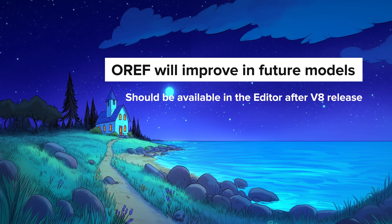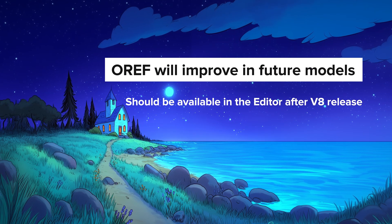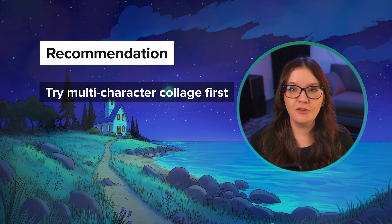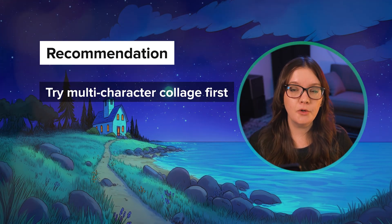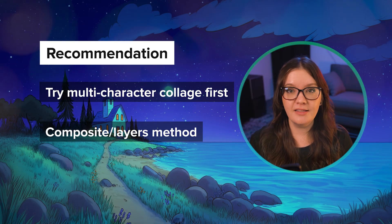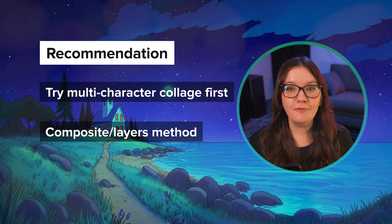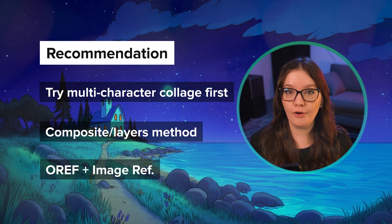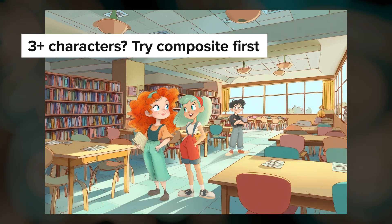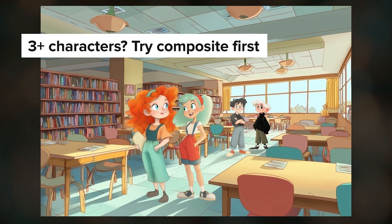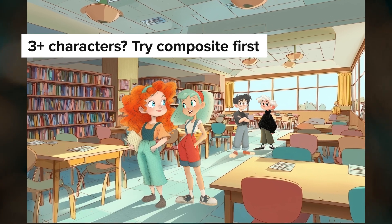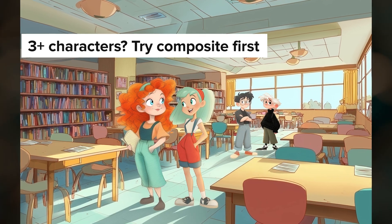Omni reference is expected to improve significantly after the V8 model is released. My recommendation is to start with the two-character collage approach unless you have a scene that would work really well as a composite — then do that instead. If neither of those work, try the oref plus image reference approach as your third option. If you're working with three or more characters, the composite layer approach is going to be your best bet, since it's much harder to get consistent results when you have more than two characters in a single Omni reference.